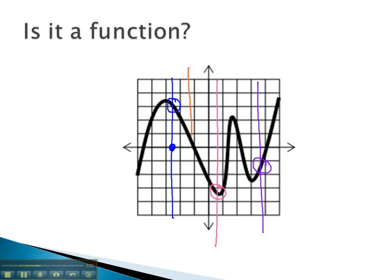If the vertical line only crosses the graph once, we can say that yes, this is the graph of a function. Each input has only one output.